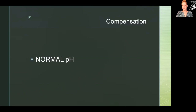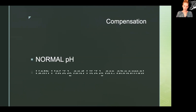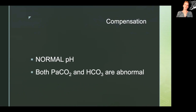The second way we can tell if compensation is occurring is that both the partial pressure of carbon dioxide and bicarbonate values will show up as abnormal — and that especially applies if the pH is already showing as normal. That's our biggest indicator. When both values are abnormal, it's because our body is trying to fix itself — it's very smart and can fix itself to some degree before we have to seek medical attention.